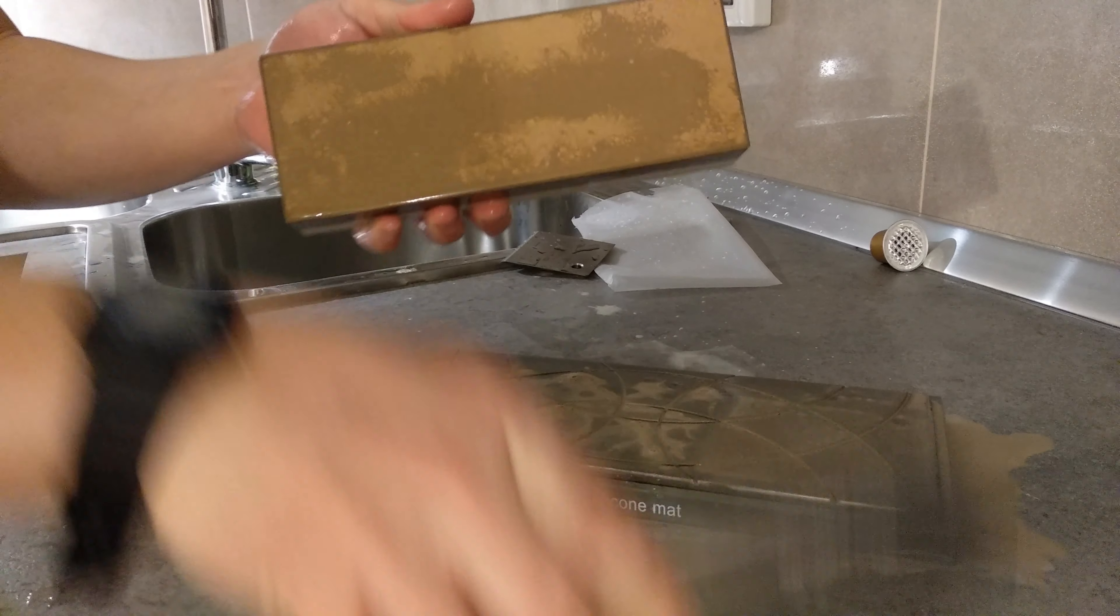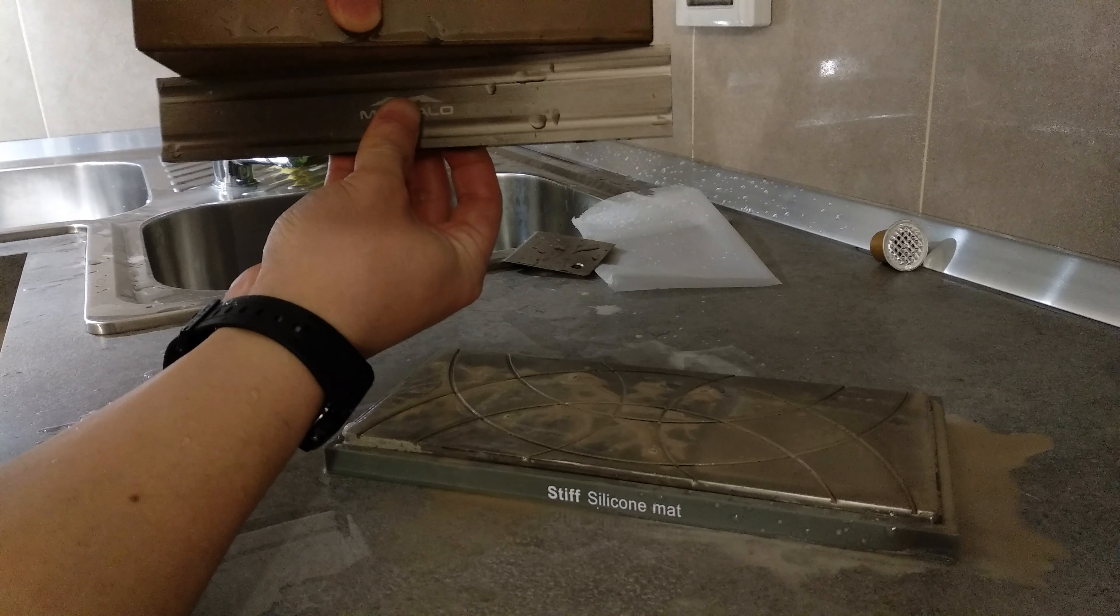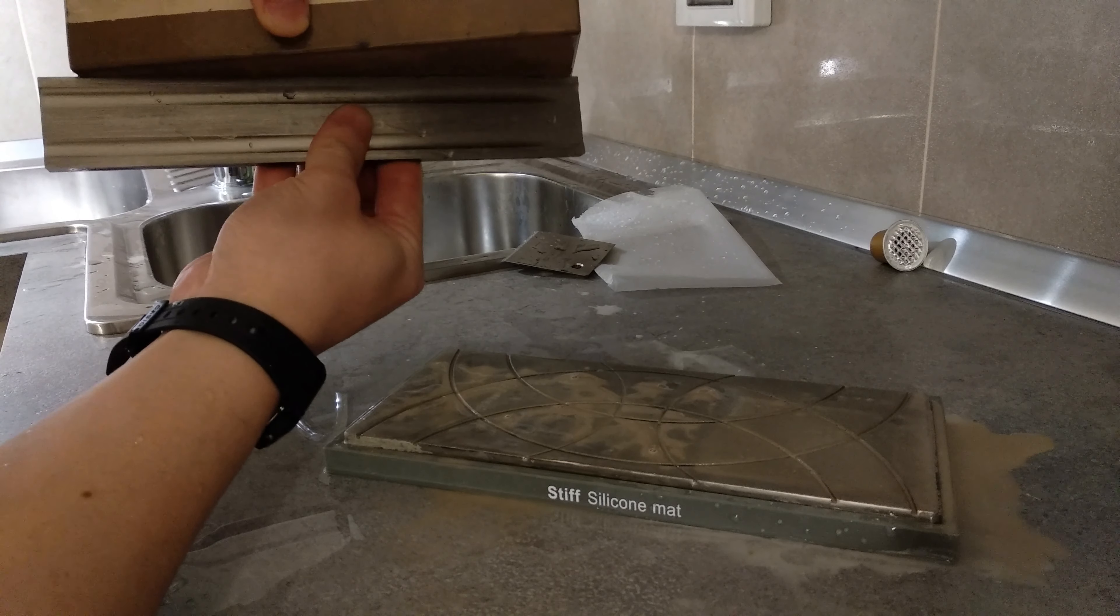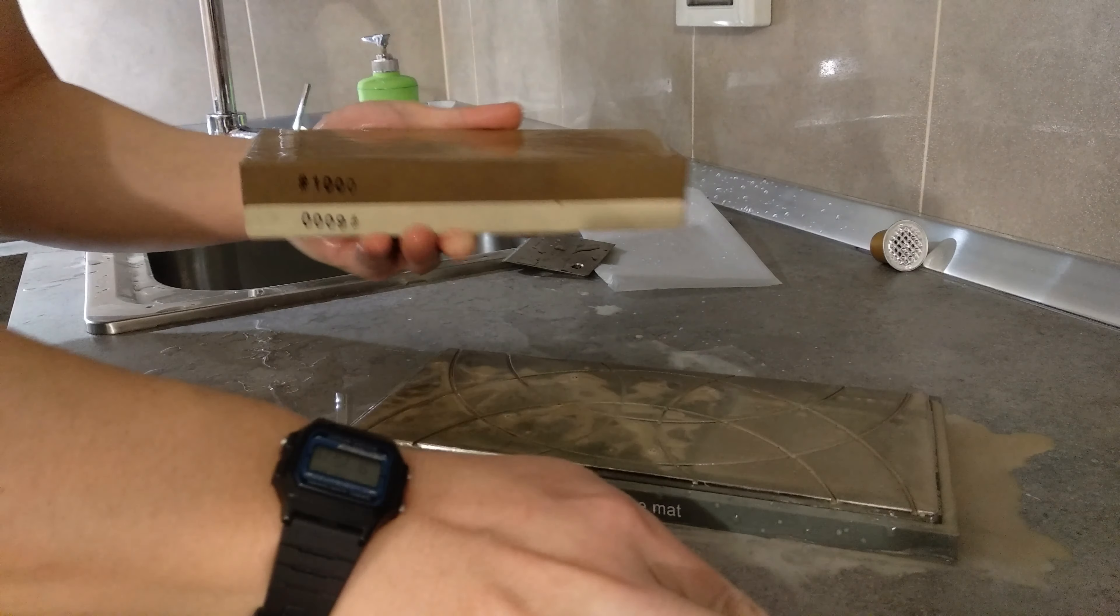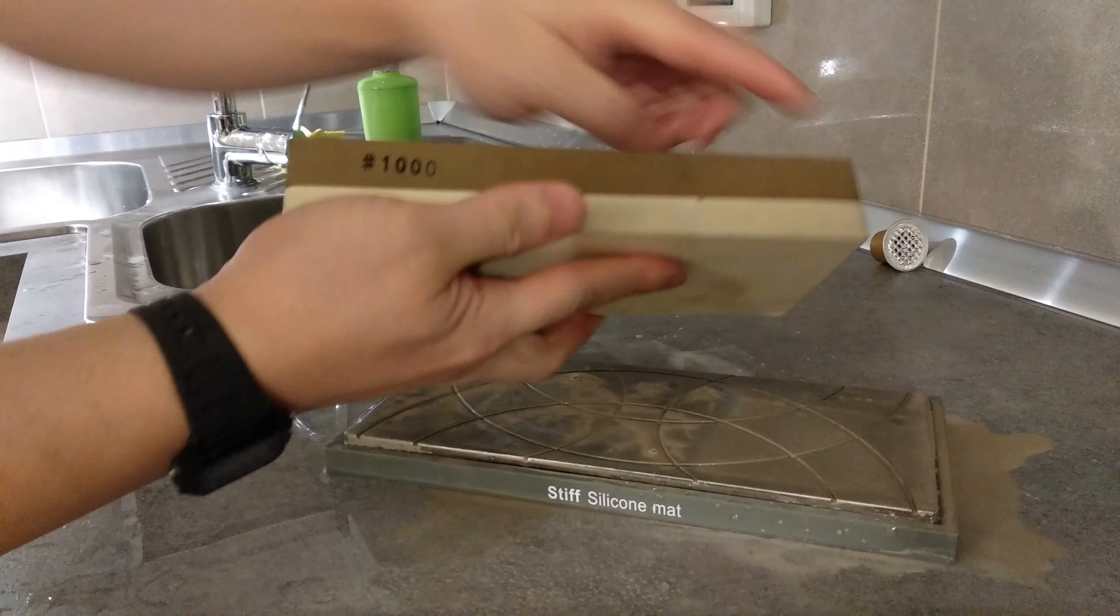You check your flatness again, looking through the lights. No lights coming out, so you're good. The last thing you'll do after you flatten both sides is you want to chamfer these sharp corners, because if you have a sharp edge you might hurt your finger sometimes.